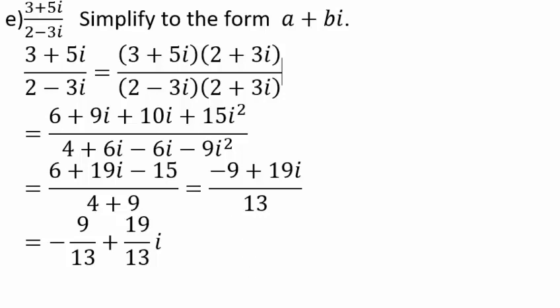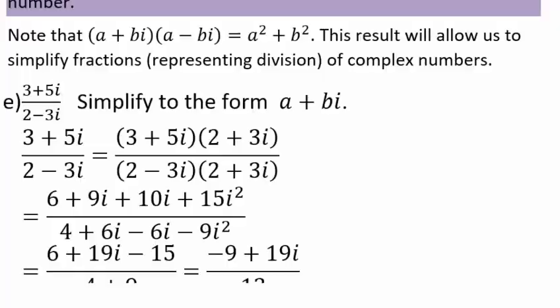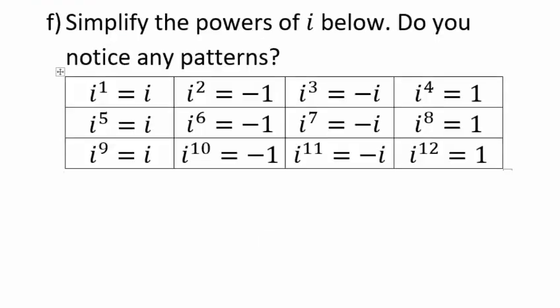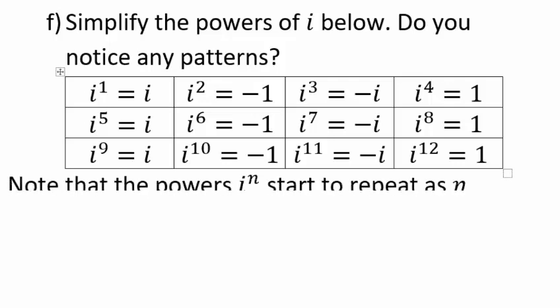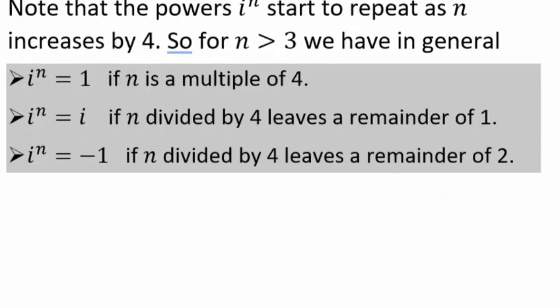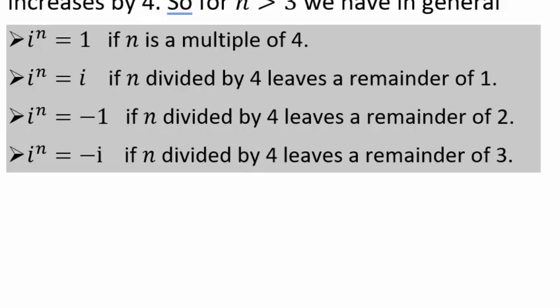We can see a pattern with powers of i: i¹ = i, i² = -1, i³ = i²·i = -i, i⁴ = 1. Raising i to a power gives either 1, i, -1, or -i, depending on whether the exponent is a multiple of 4, leaves remainder 1, remainder 2, or remainder 3 when divided by 4.